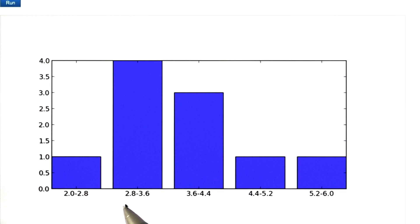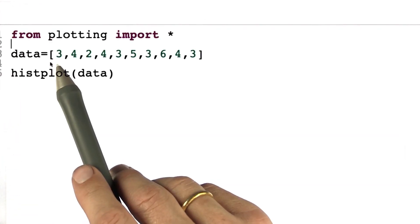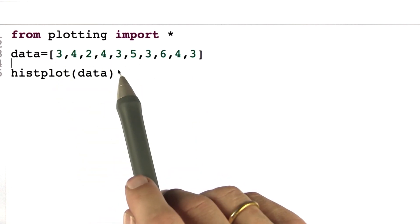Obviously, the range of 2.8 to 3.6 is the most frequent. As we go back to the data, we find three occurrences of 3 that fall into this range - the most frequent range.